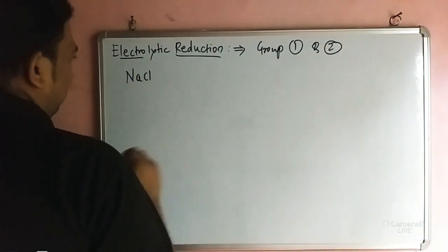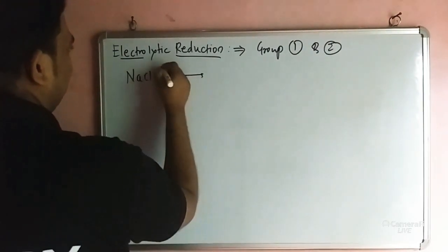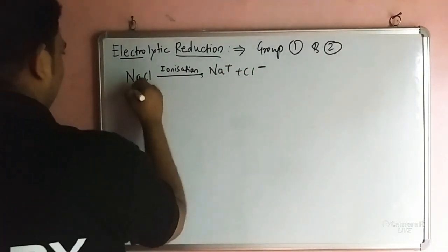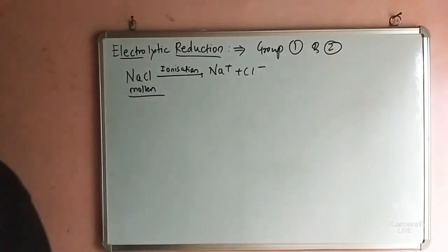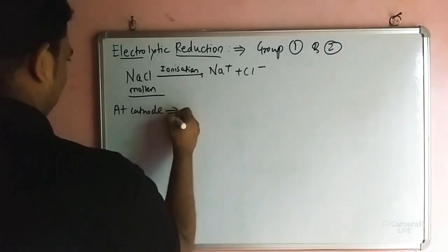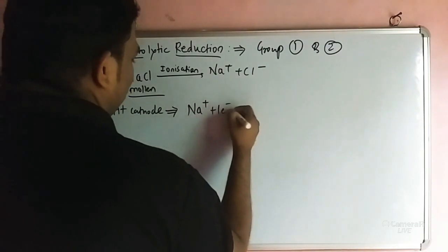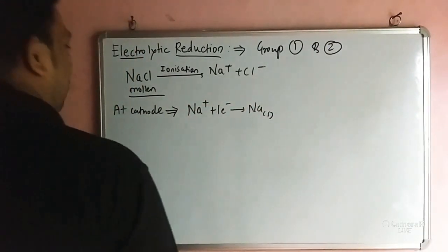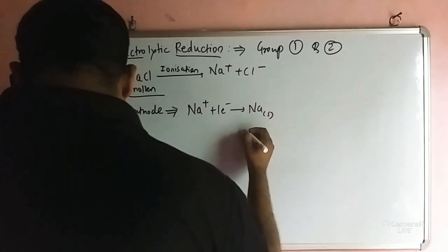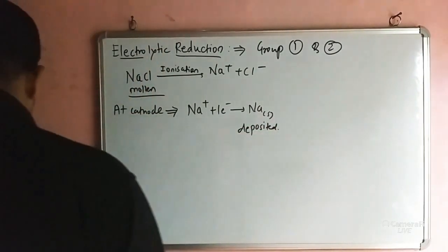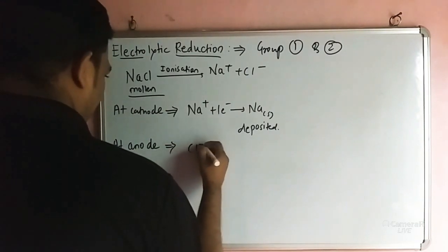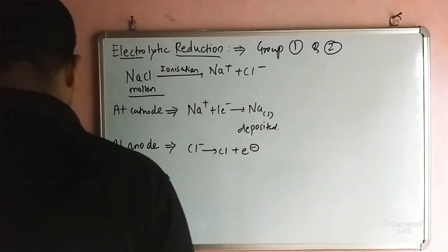For example, NaCl ionizes into Na+ and Cl−. At the cathode, reduction occurs: Na+ + e− gives Na (solid). At the anode, oxidation occurs: Cl− gives Cl + e−. Atoms and charge are both balanced.